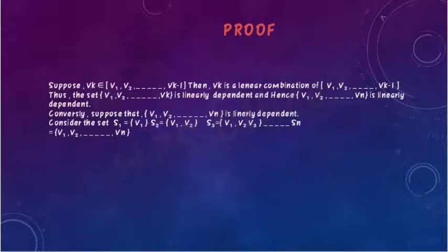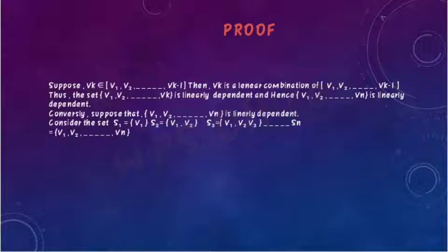Proof. Suppose Vk belongs to the span of {V1, V2, ..., Vk minus 1}. Then Vk is a linear combination of {V1, V2, ..., Vk minus 1}. Thus the set {V1, V2, ..., Vk} is linearly dependent, and hence {V1, V2, ..., Vn} is linearly dependent.